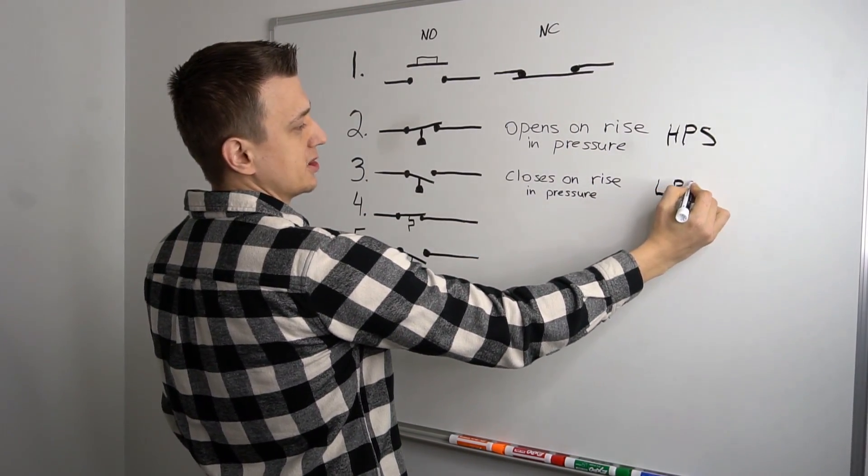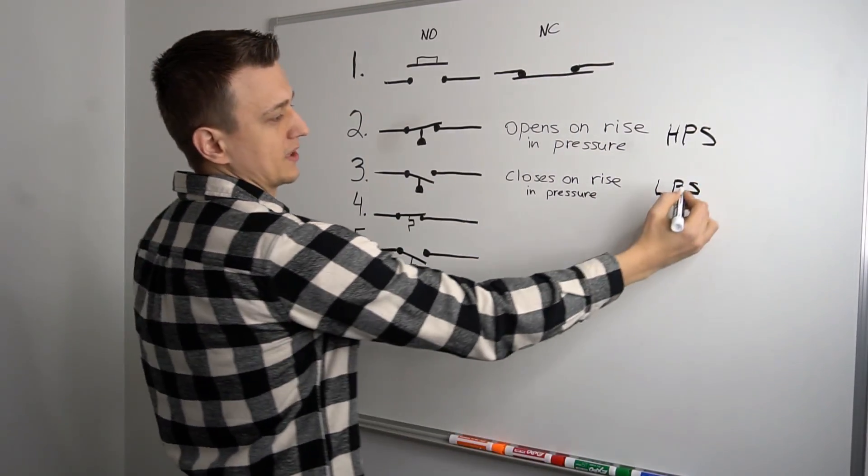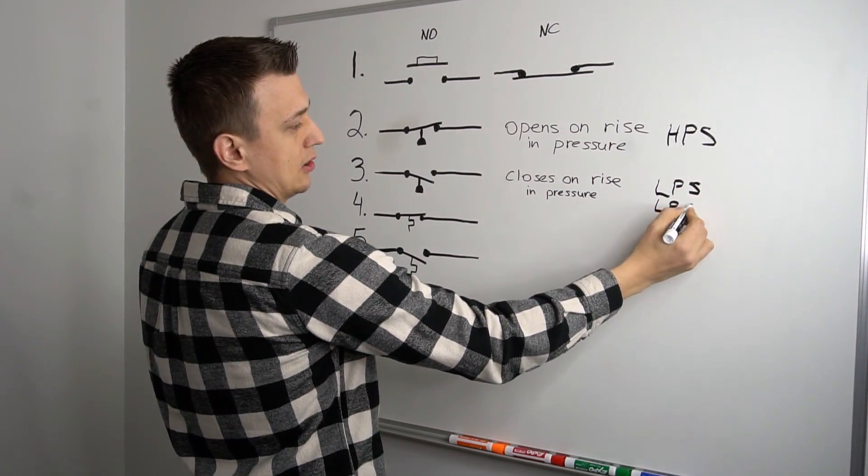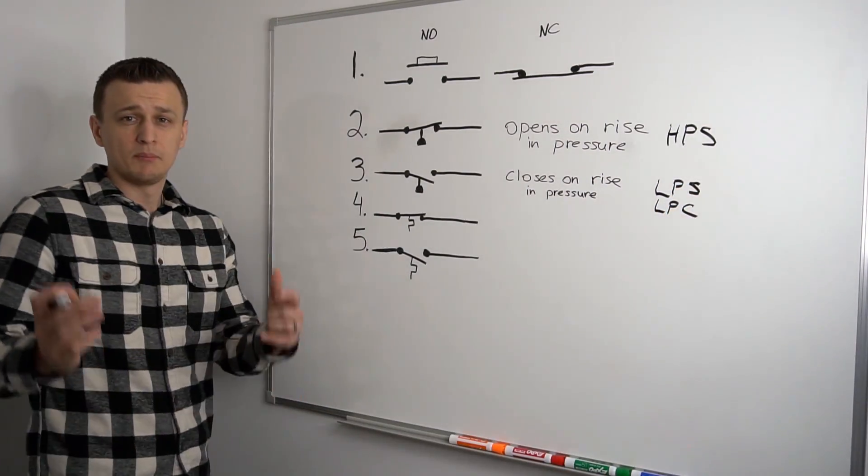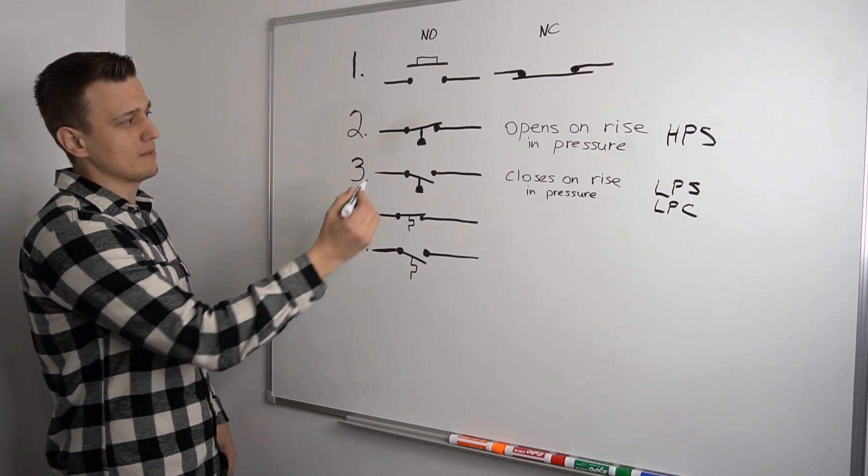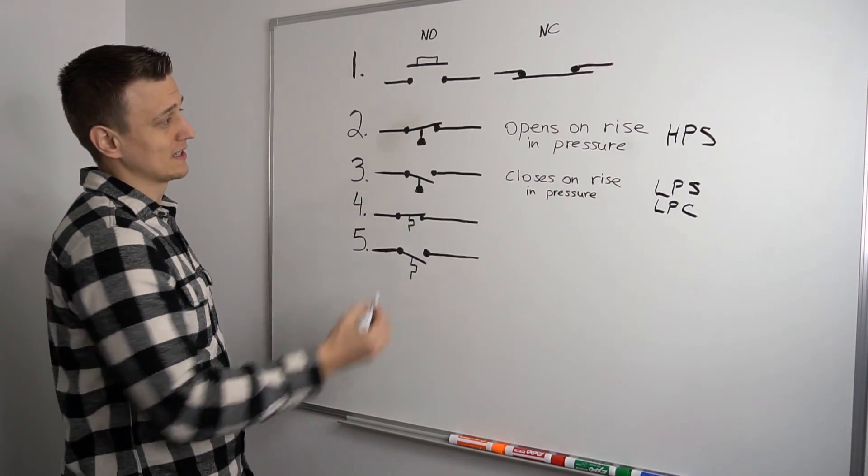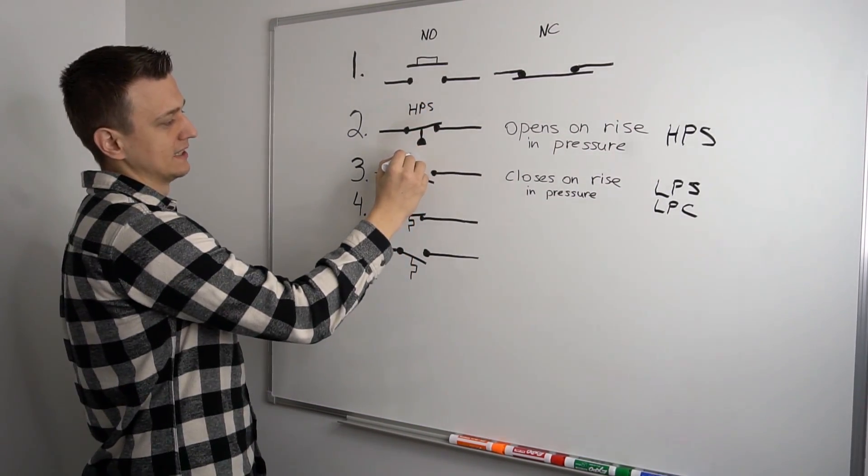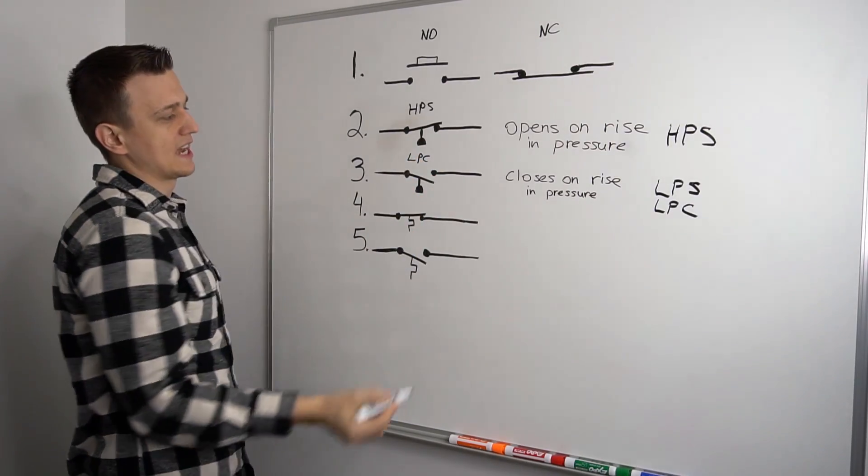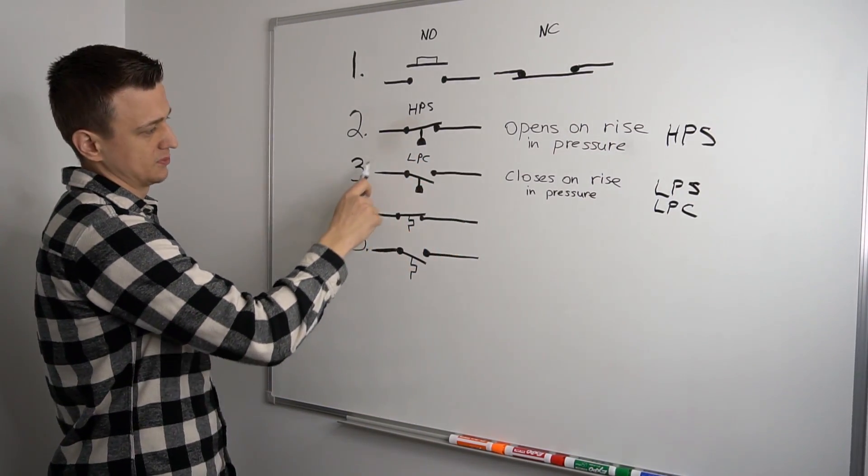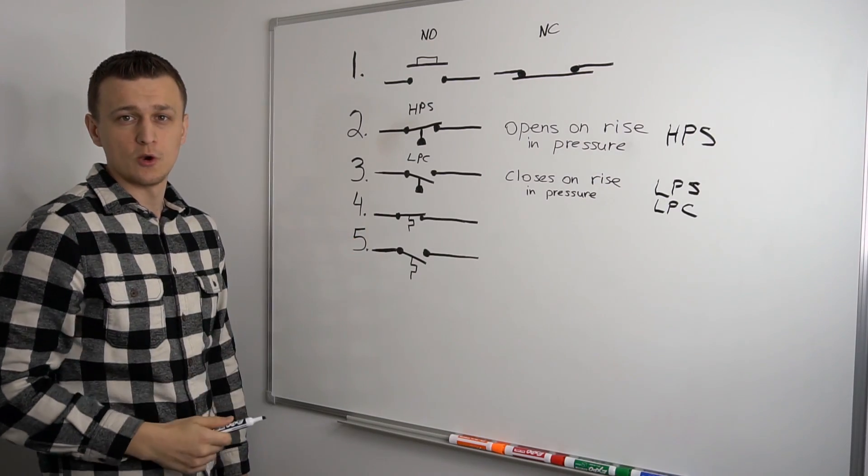So this one would be an HPS for high pressure switch and low pressure switch right here. This is for air conditioning. So this one can be written either as an LPS or LPC, low pressure cutoff. But on most air conditioning wiring diagrams, the good thing about those is that most of the time, these will be labeled anyways. As for furnaces though, furnaces are always going to have this pressure switch right here, which is normally open.